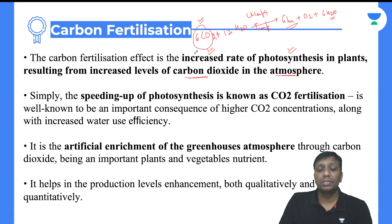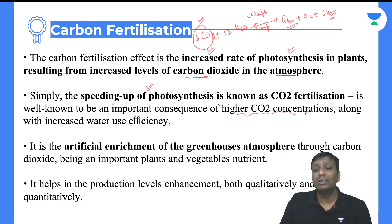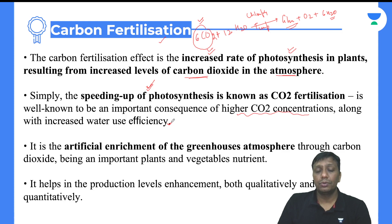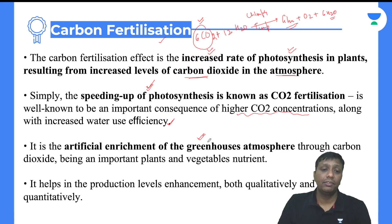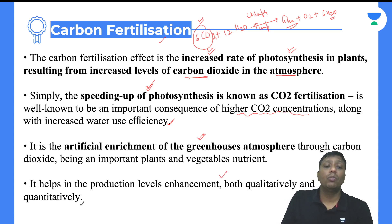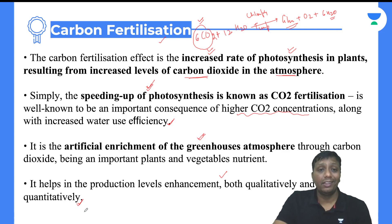Carbon fertilization is a process: during an increase of carbon dioxide, photosynthesis is enhanced. The higher carbon dioxide concentration increasing the rate of photosynthesis is called carbon fertilization. It also increases water use efficiency. It is an artificial enrichment of the greenhouse gas atmosphere. Both qualitatively and quantitatively, production increases, and this whole process is part of carbon fertilization.